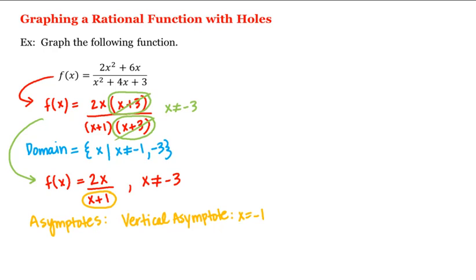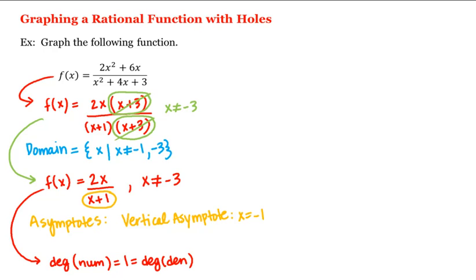What about any horizontal asymptotes? Notice that the degree of the numerator is equal to 1, which is also the degree of the denominator. Therefore this graph will have a horizontal asymptote at y equal to the ratio of the leading coefficients, which is 2 divided by 1, or y = 2.